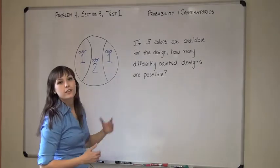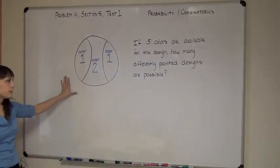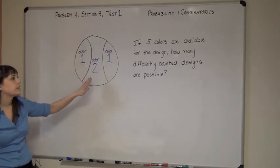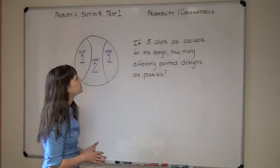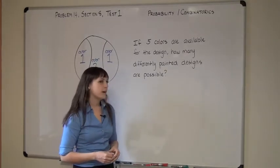This question is a probability slash combinatorics type question. You're given this figure, labeled with color 1 and color 2, and the question reads: if five colors are available for the design, how many differently painted designs are possible?